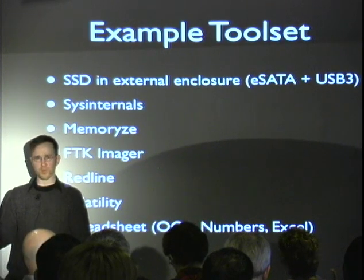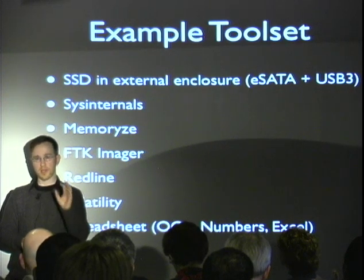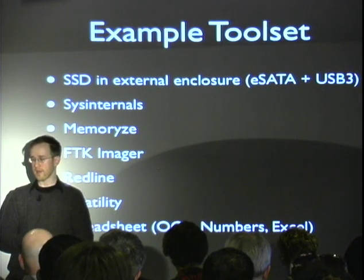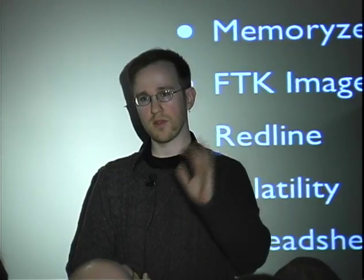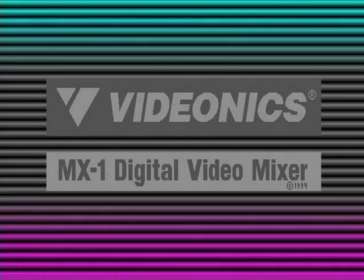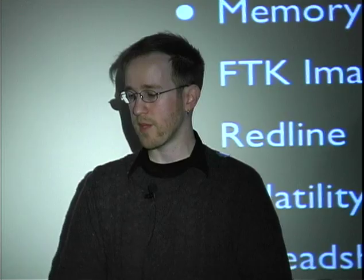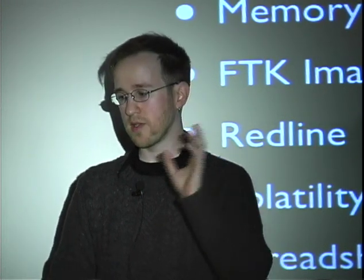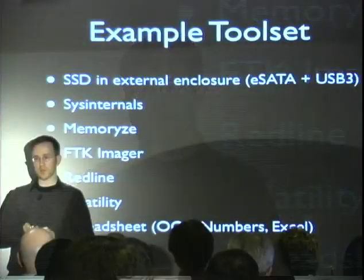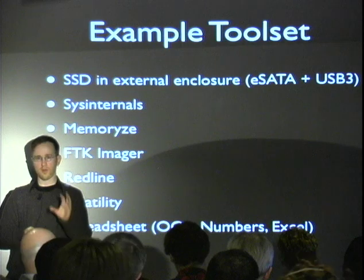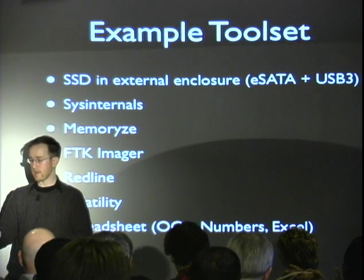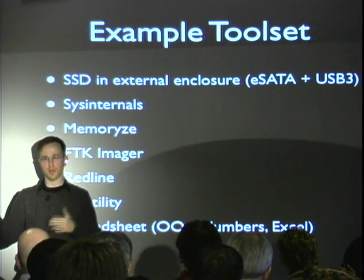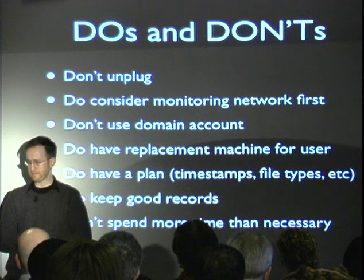Here's an example toolset that closely matches what we use: an SSD and external drive enclosure for acquisition; Sysinternals suite for Windows to pull registry information and auto-run data; Memorize, a free tool from Mandiant — there's also a Mac version — for memory acquisition; FTK Imager primarily for disk acquisition and file system information; Redline, another free Mandiant tool, for analysis of memory, processes, and DLLs; Volatility, a powerful command-line tool to carve into memory images and extract intelligence; and spreadsheets, because you'll get a lot of output in text files that you need to sort and display logically.